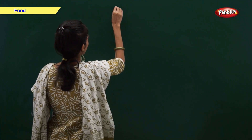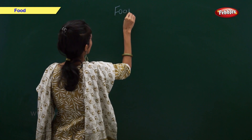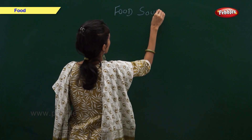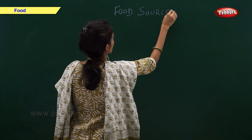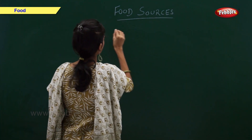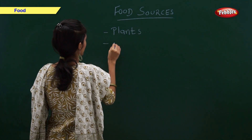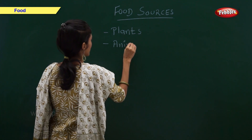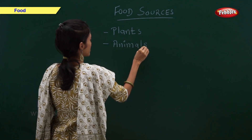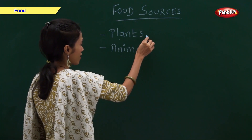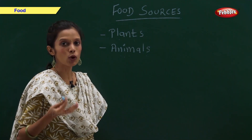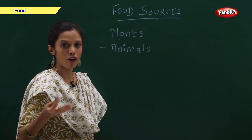There are many kinds of food. We get food from plants and animals. So, our food sources are plants and animals. Now, let us have a look at them one by one in detail.